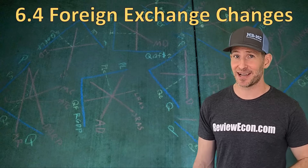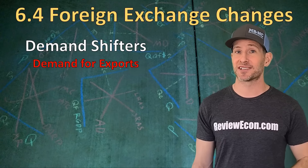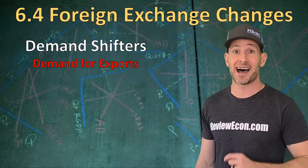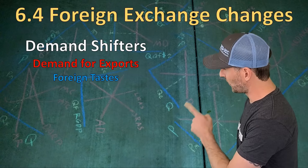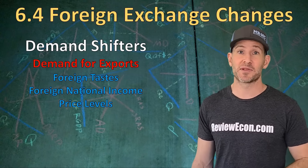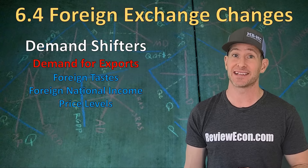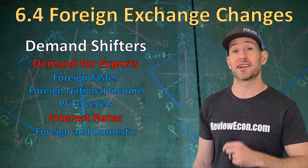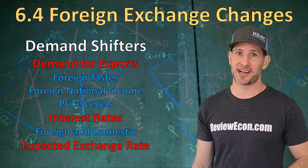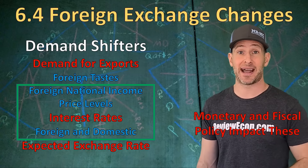Just like all other markets we've learned, those demand and supply curves will shift around. Let's look at the demand shifters first. We have the demand for exports because if you want to buy a U.S. product, you're going to need U.S. dollars — so when people in other countries want to buy our stuff, they must demand U.S. currency. Within that demand for exports, we have foreign tastes for U.S. made goods, foreign national income, and price levels within our country and within other countries, because that impacts the relative cost of foreign and domestic goods. We also have interest rates — both foreign and domestic — because foreign investors seek high rates of return found with high interest rates. And the last one is expected future exchange rates. Remember, these factors can be impacted by monetary and fiscal policy, and that will impact the foreign exchange markets as well.